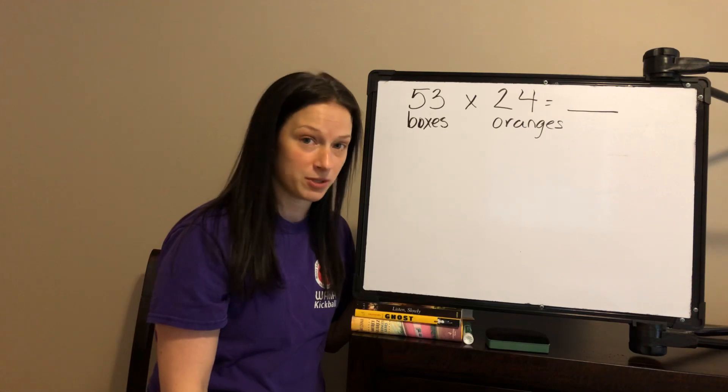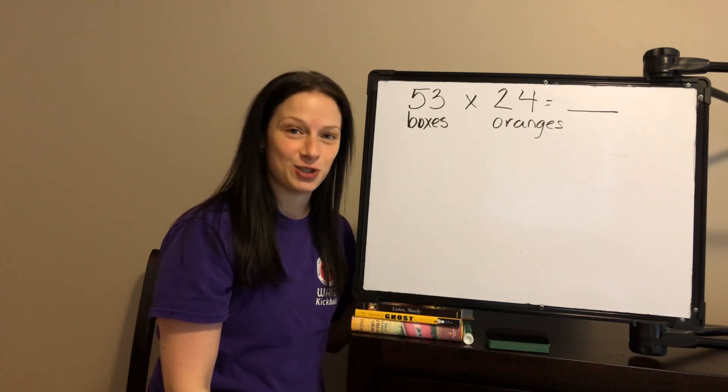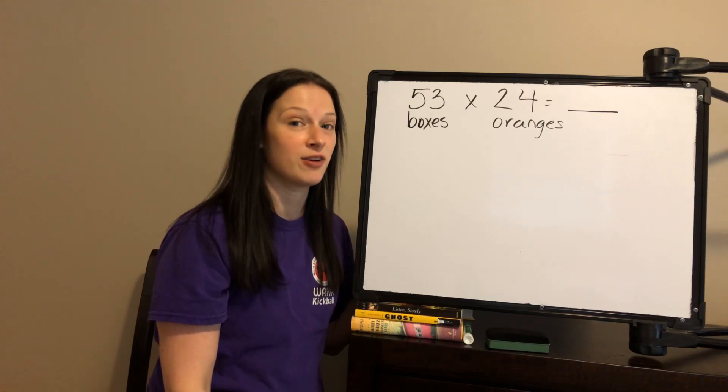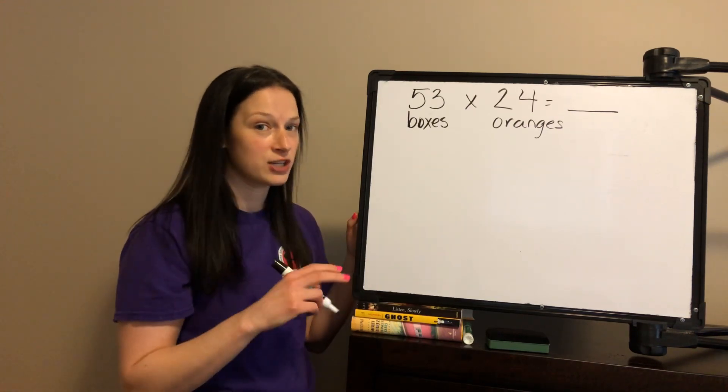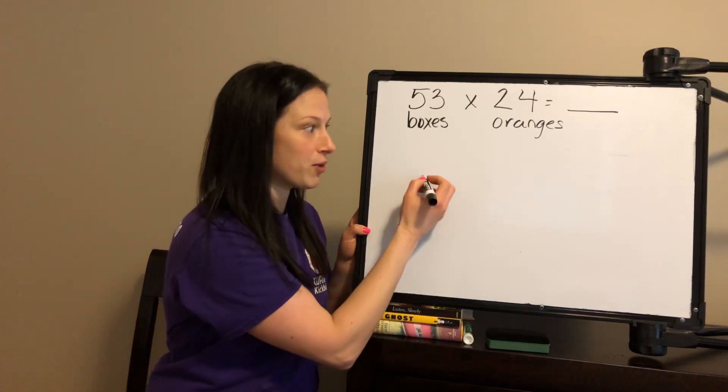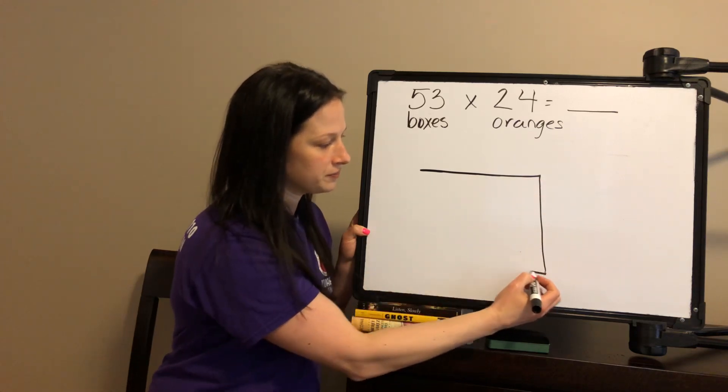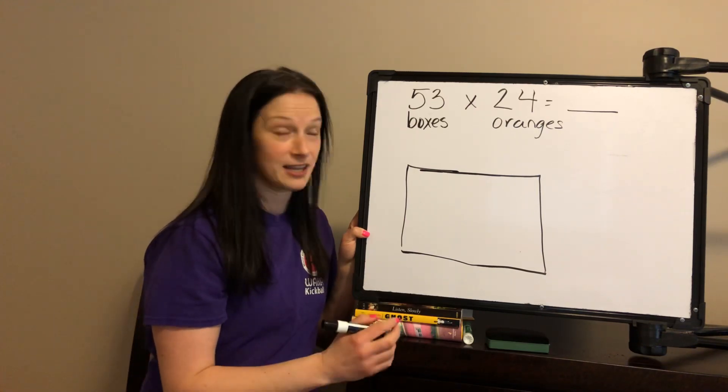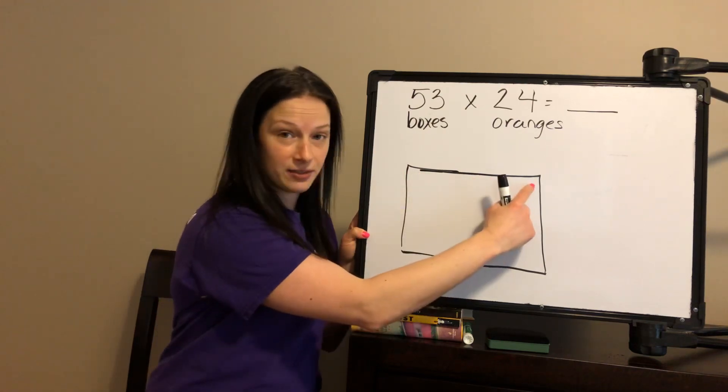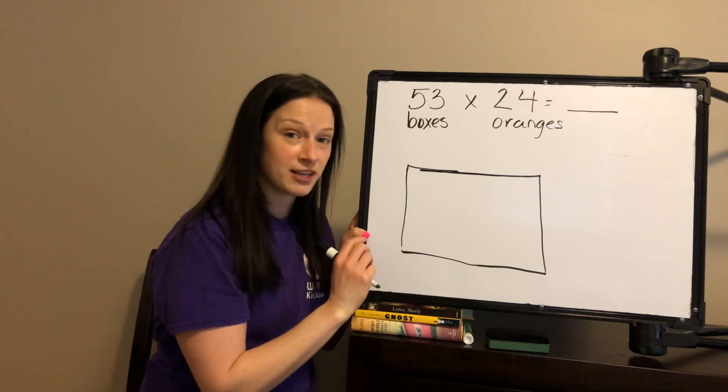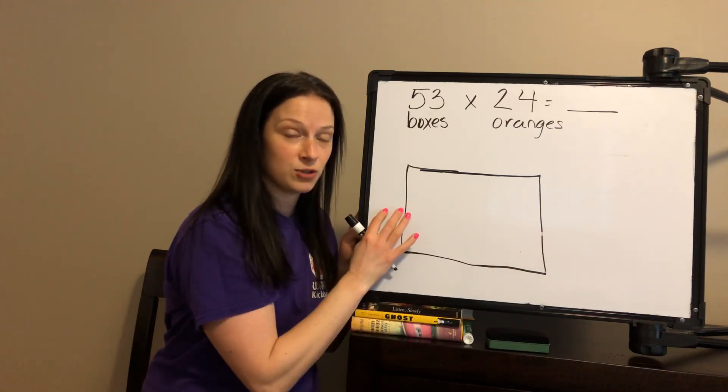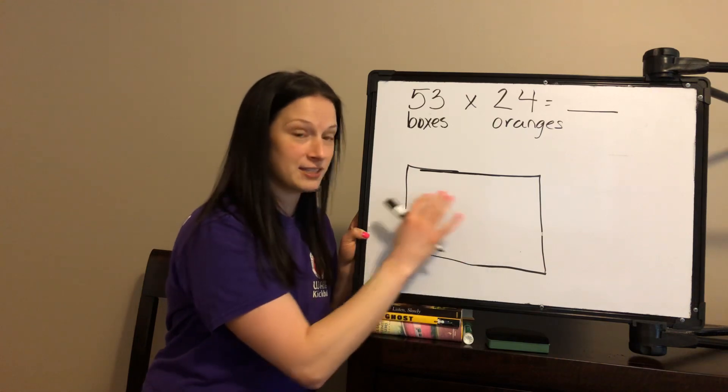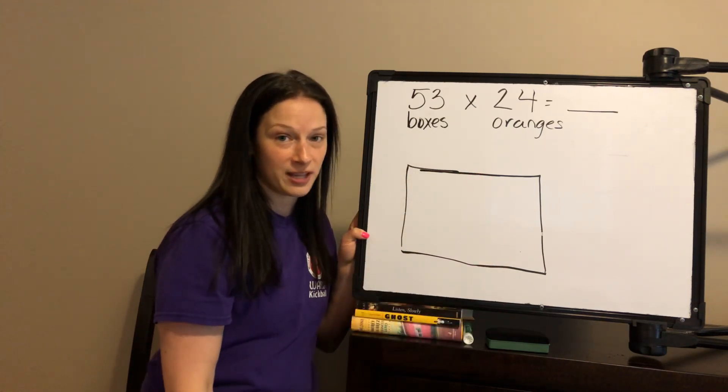We're going to start with breaking both numbers apart. Parents, I know you've seen your students start to draw what we call the area model for multiplication. This is a representation to help us keep track of our strategy. It's not the actual name for the strategy because we can break up the area model however we want. So I'll make it big so I don't run out of space. We have a rectangle and the area of a rectangle is length times width. The other thing that I want people to understand is that in a rectangle, opposite sides are equal.